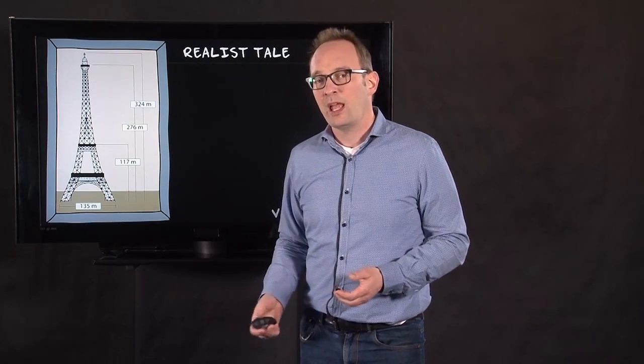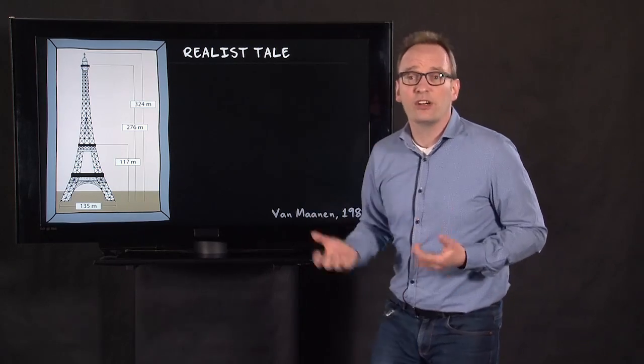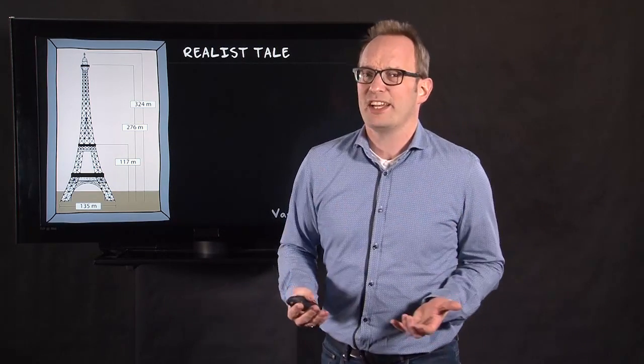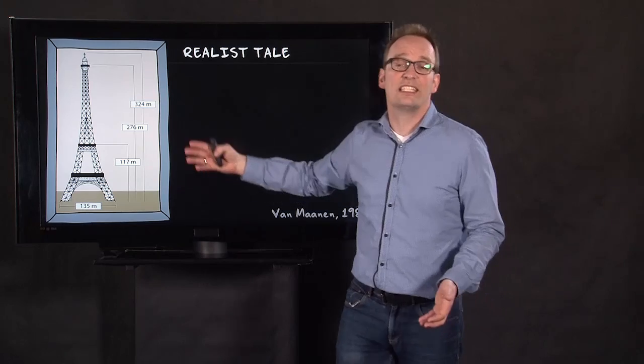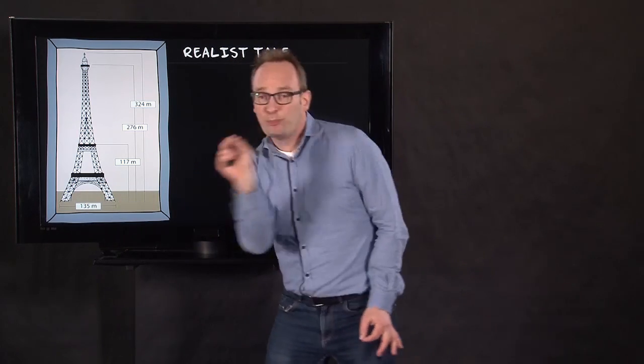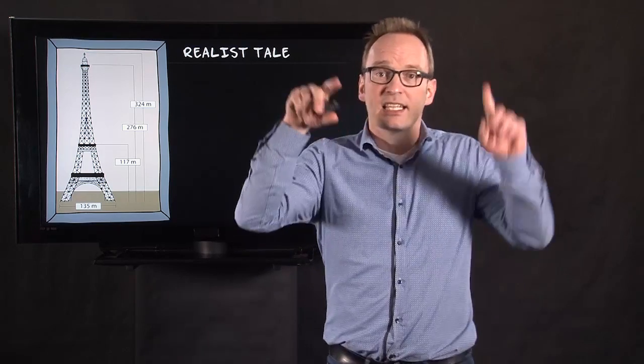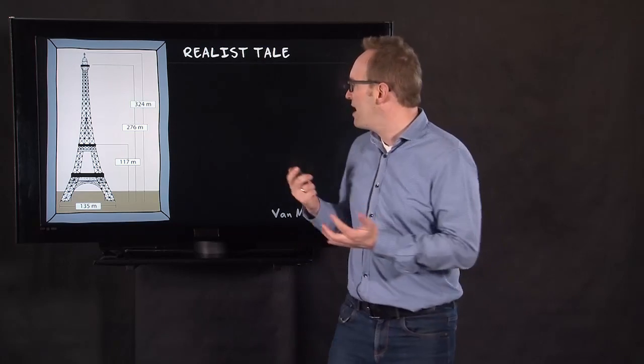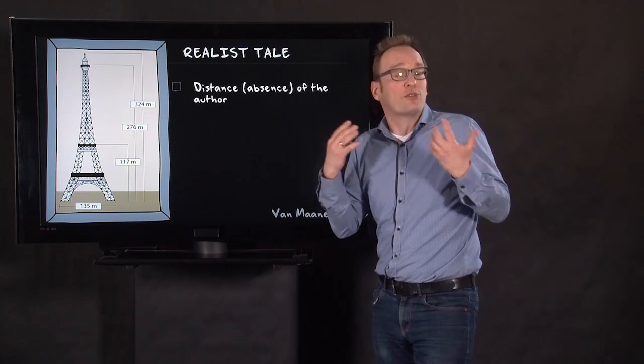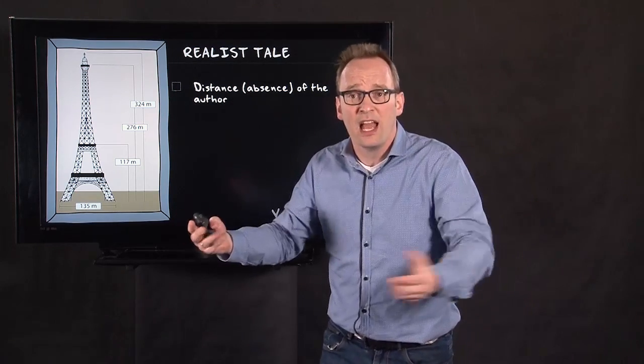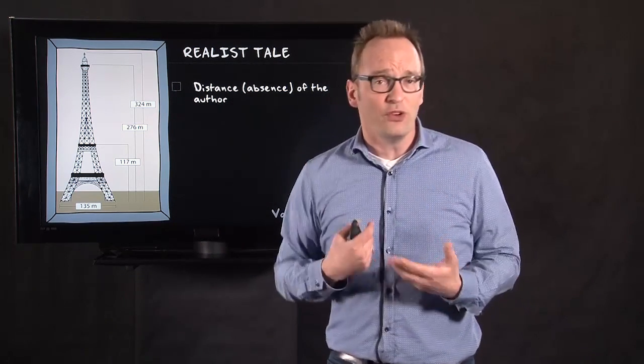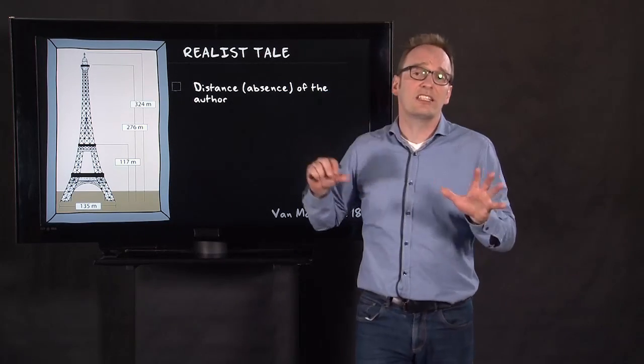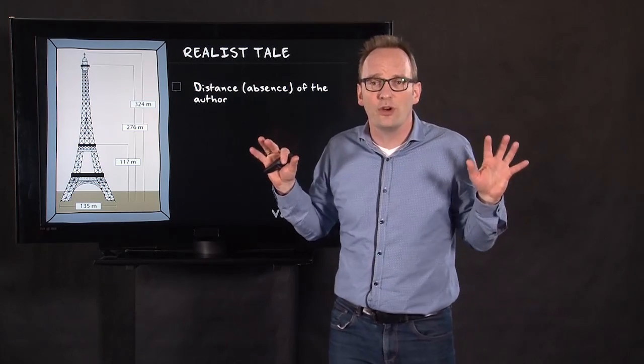According to Van Maanen, there are different ways of dealing with writing, different tales one can write. And this is a realist tale. You see, this is the Eiffel Tower and it's pretty realist, it's pretty precise. And as an image, as a painting, it's a realist tale. Van Maanen says we have different kinds of tales, tales in writing and different ways of writing. The first one he distinguished is the realist tale. A realist author distances him or herself from the material and writes it down as if it's just there.